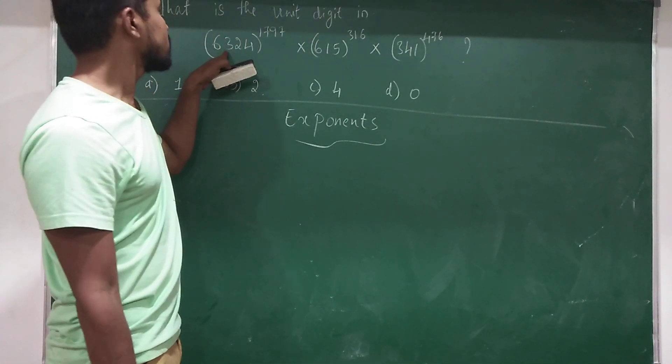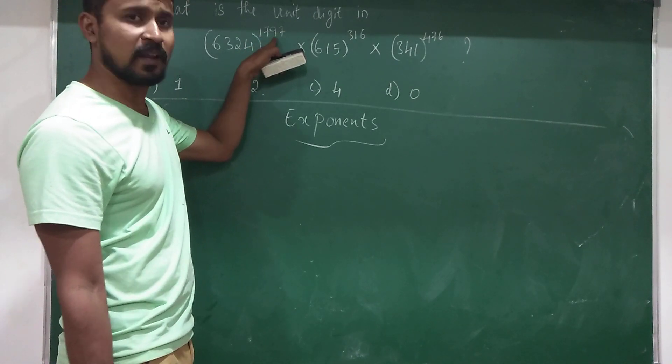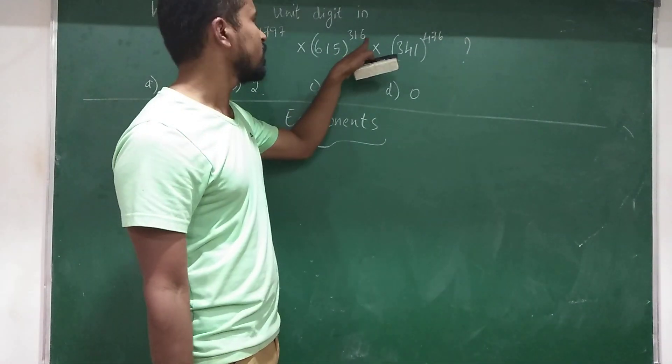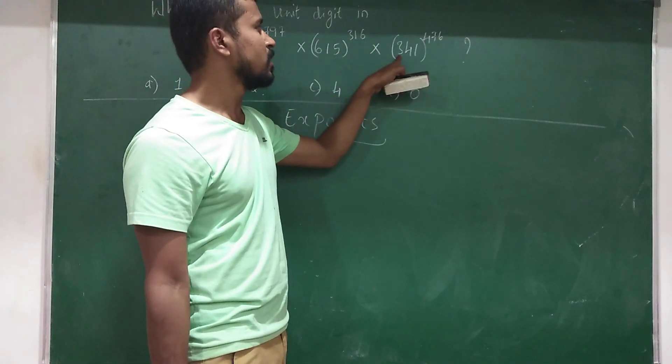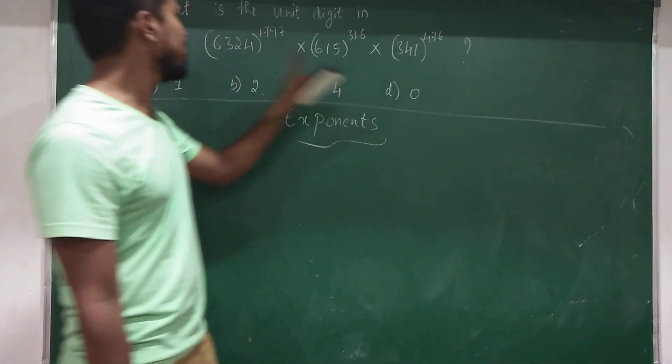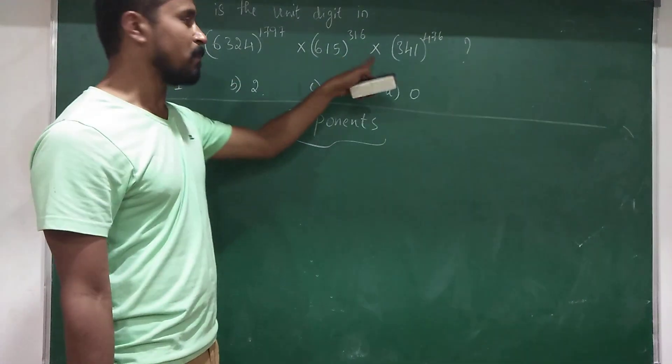6,324 to the power of 1797, multiplied by 650 to the power of 360, multiplied by 341 to the power of 786. What he is asking? What is the unit place when we multiply this?